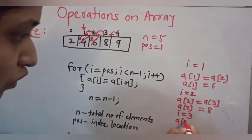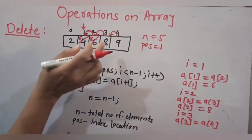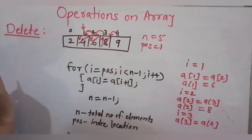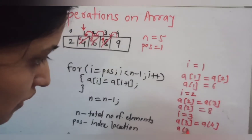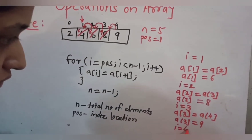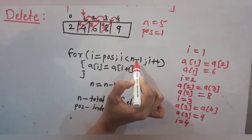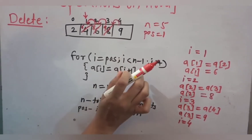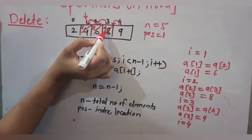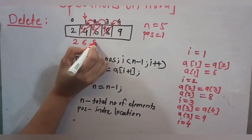With i=3, we perform a[3] = a[4]. a[4] is 9, so 9 is copied in place of 8 — a[3] becomes 9. After i++, i becomes 4. Now the condition 4 < 4 is false, so the for loop stops. All values have shifted to the left, and the array is now: 2, 6, 8, 9.